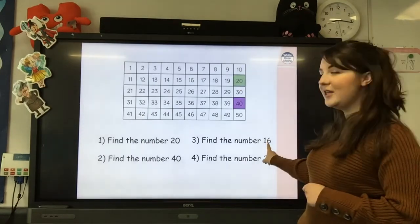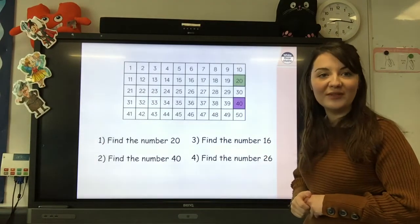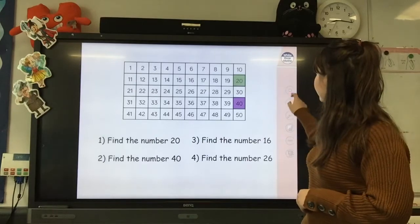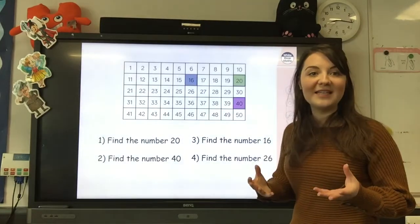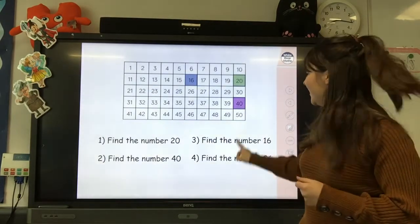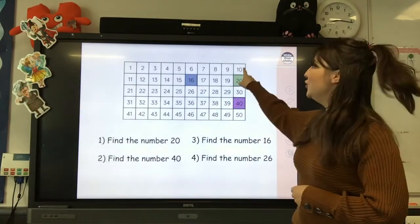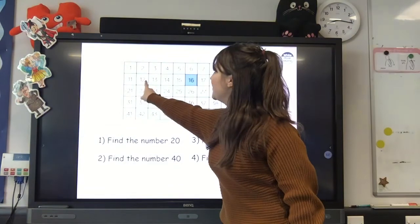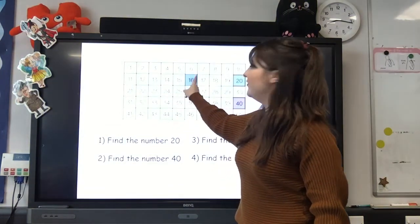Now, can you find the number 16 on your 50 square? To find 16, you will know that it has 1 ten, so you can jump to 10 and count on your ones. 11, 12, 13, 14, 15, 16.